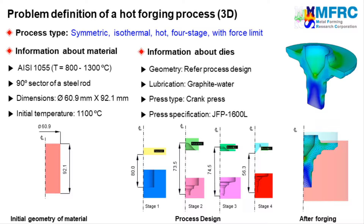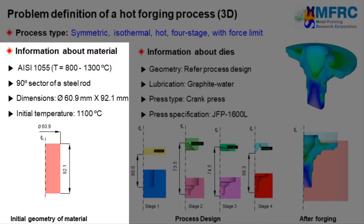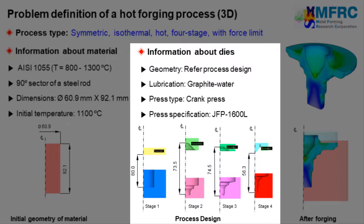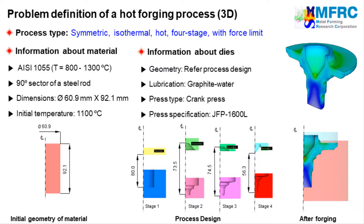The information about the material is given on the left side. The dimensions of the workpiece are as shown in the figure on the left. The material of the workpiece is a steel grade and its initial temperature is 1100 degrees Celsius. The final configurations of each stage of the dies are as shown in the picture. The dimensions indicated denote the distances between the control points at the final stroke of individual stages. Graphite water is used as a lubricant, so a corresponding friction formulation will be selected. A 1600 tonnage crank press will be used in this simulation. The problem definition is complete.